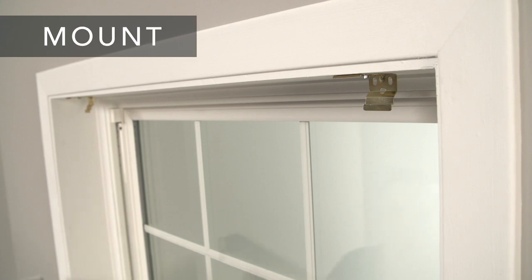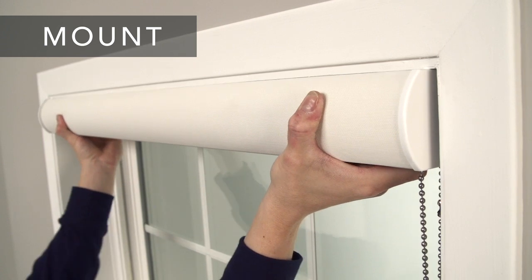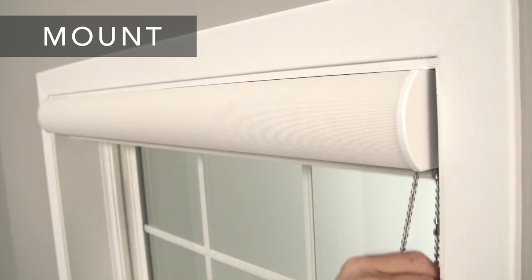Now you're ready to mount your shade. Place the front groove of the shade back bar in the bracket lip and rotate it up until it snaps into place.